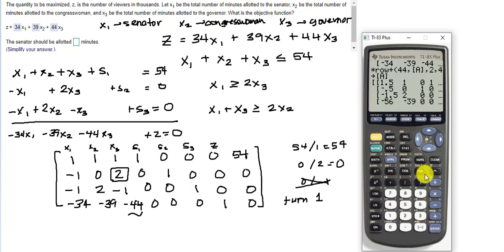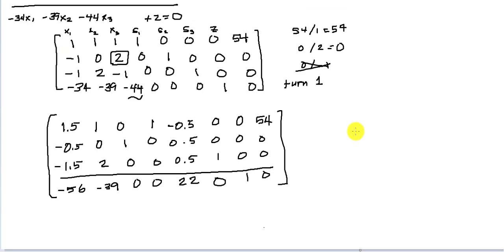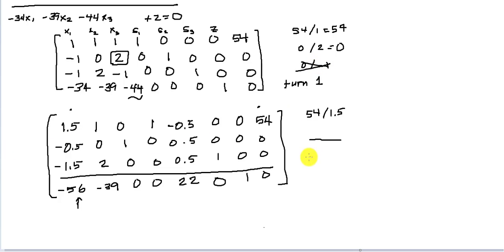We now have a new matrix A. We do that same process again: find the most negative indicator on the bottom row, which is negative 56. The ratios are 54 divided by 1.5, 0 divided by negative — discard that, and 0 divided by negative — discard that too. So row 1 is our pivot with 54 divided by 1.5, and we change that to a 1 by dividing row 1 by 1.5.